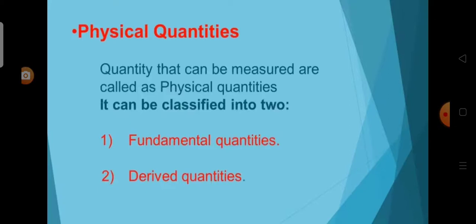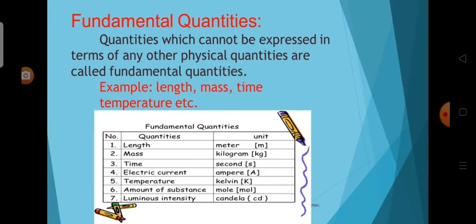Now we see about the physical quantities. What is physical quantity? A quantity that can be measured is called a physical quantity. The physical quantity is classified into two types: one is fundamental quantity and the other one is derived quantities.